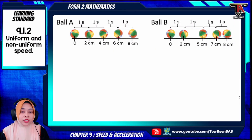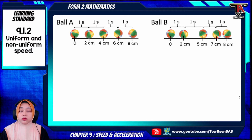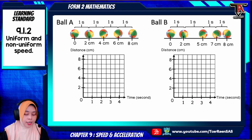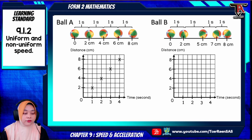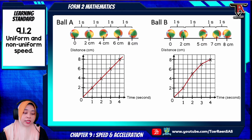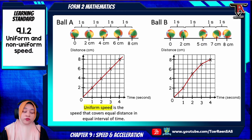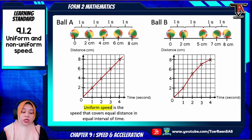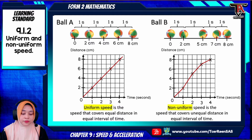Look at the movement of this ball in the diagram. Ball A and ball B are rolled on the table. I show to you the distance-time graph for ball A and ball B. The graph for ball A is like this and the graph for ball B will be like this. The form of the graph shows that ball A moves in uniform speed because the graph is a straight line, while ball B is moving in non-uniform speed.